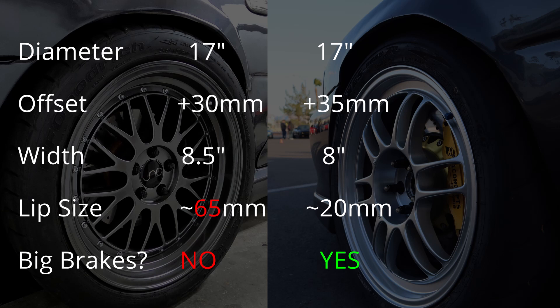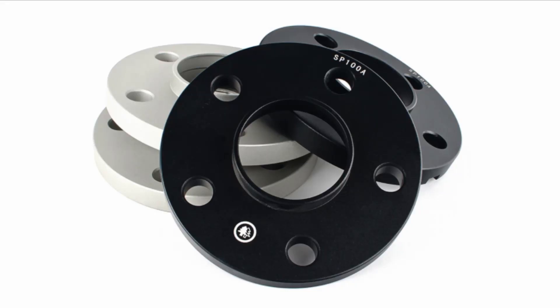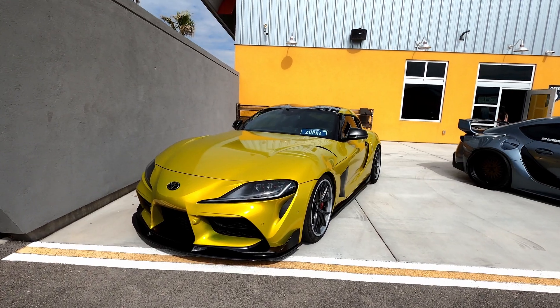My street and track wheels both are 17 inches in diameter and both have a nice lip, but only my track wheels will clear big brakes. This is because of how flat the design is on my street wheels. For me to make my street wheels work, I would have to add wheel spacers.